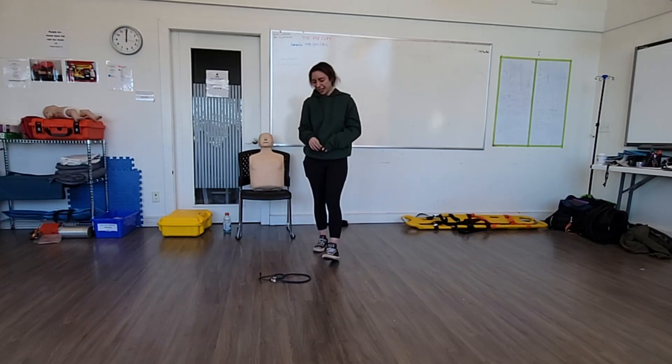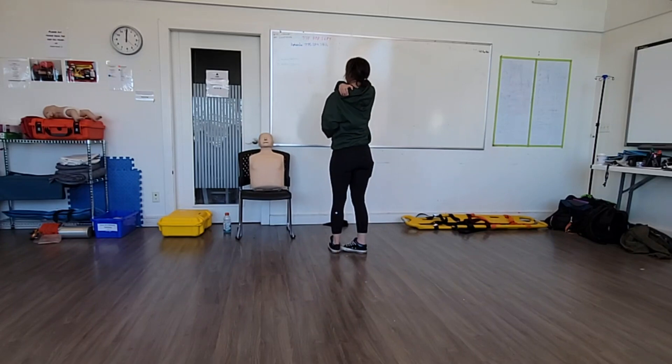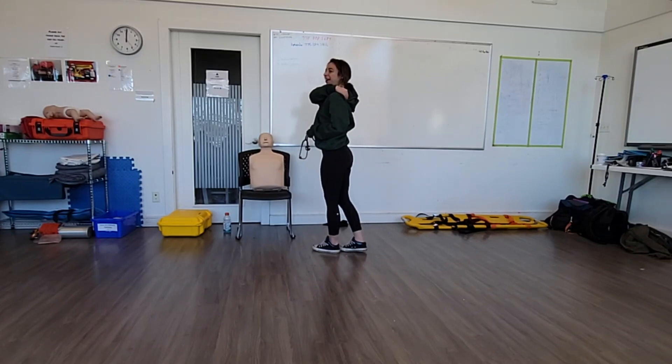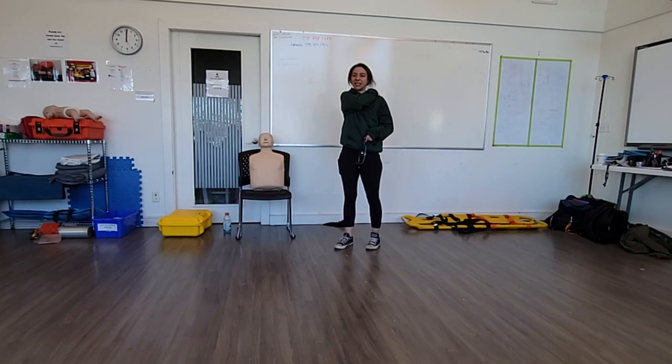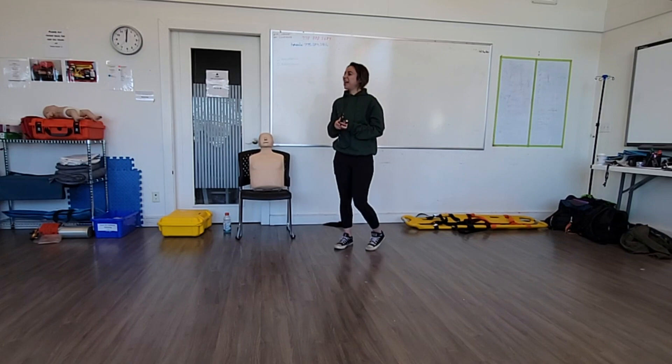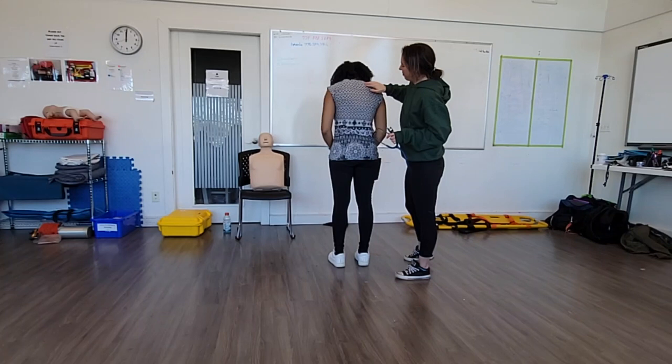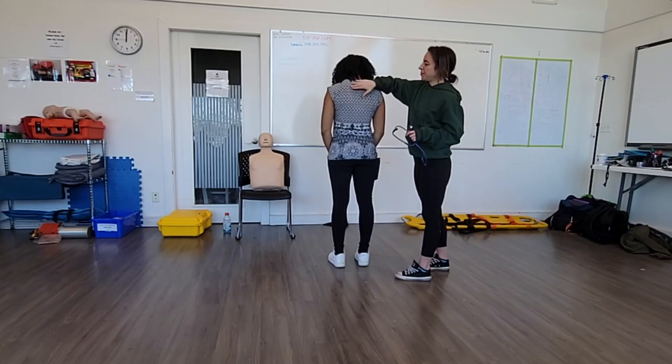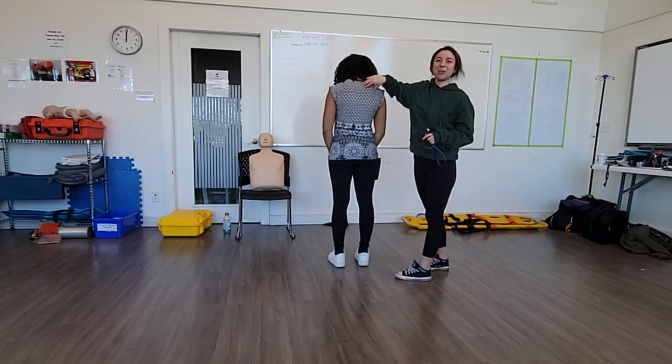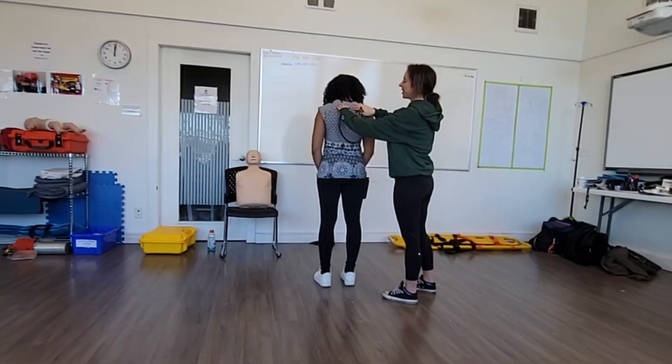On the back, we're basically mirroring the same auscultation points. What we're looking for is making sure we're not going onto the scapula, the shoulder. When you feel someone's back, you can feel the bony structure. We don't want to go on top - we're not going to auscultate on bone.